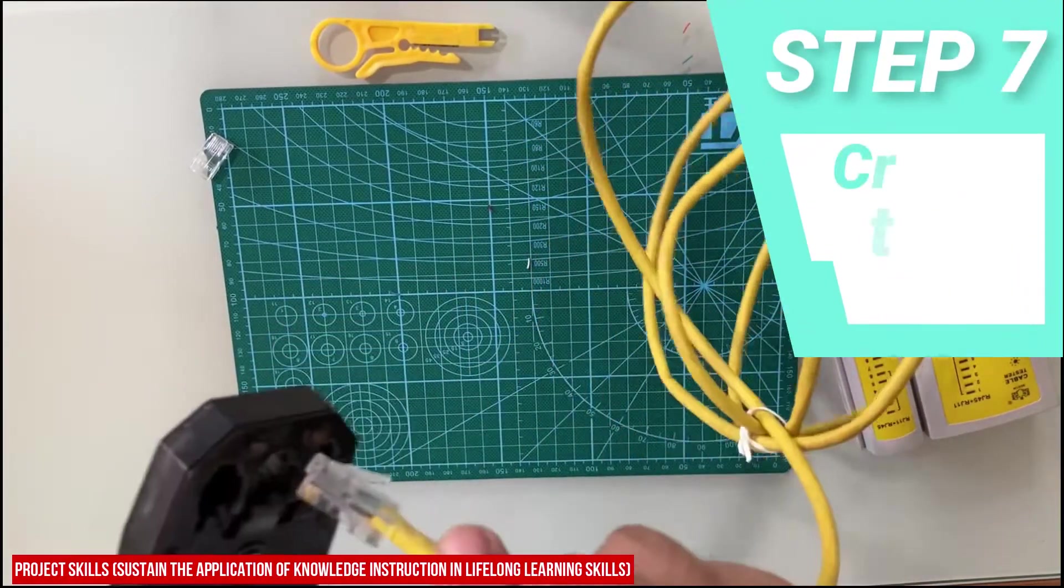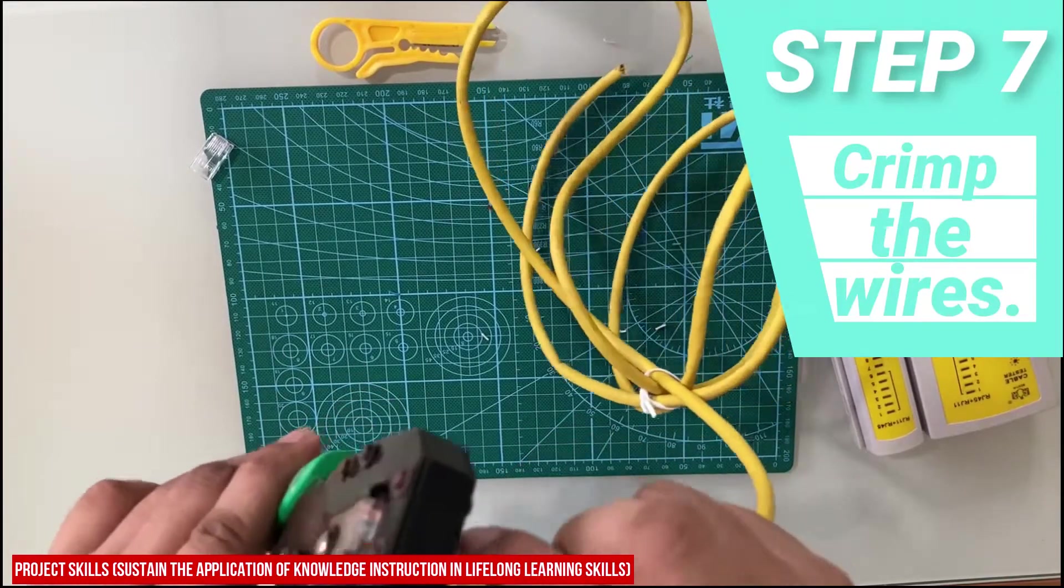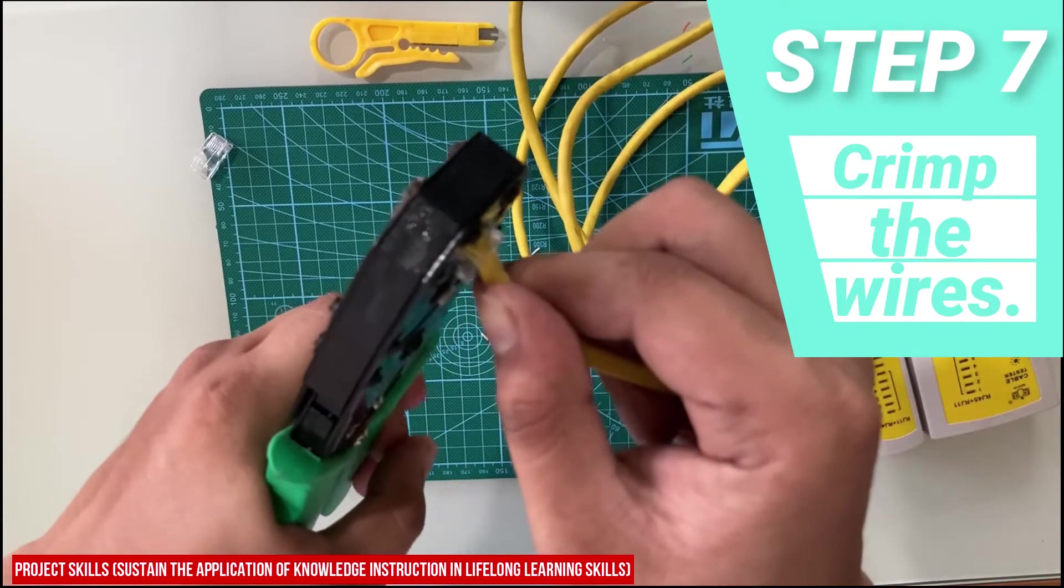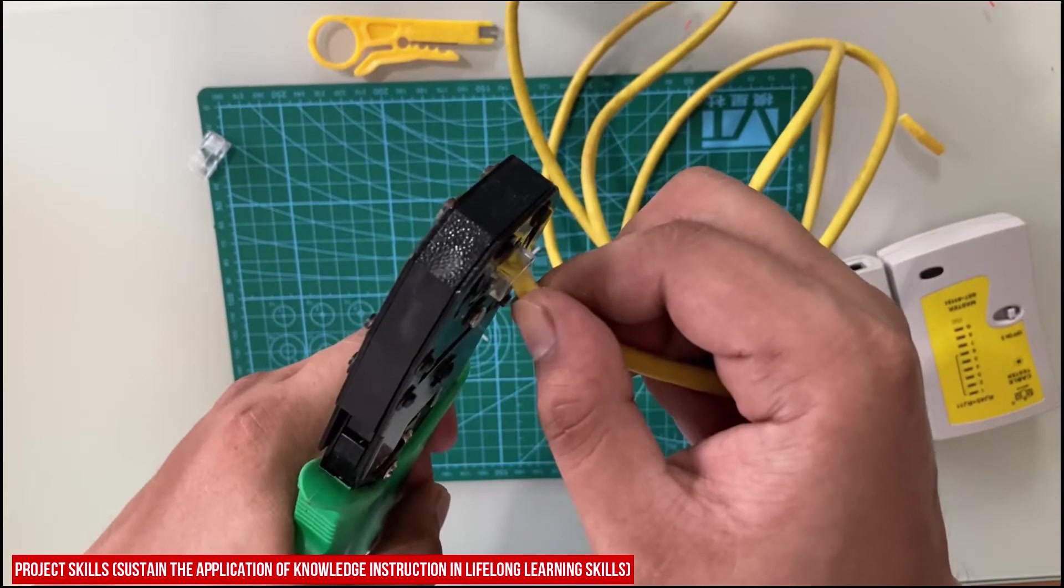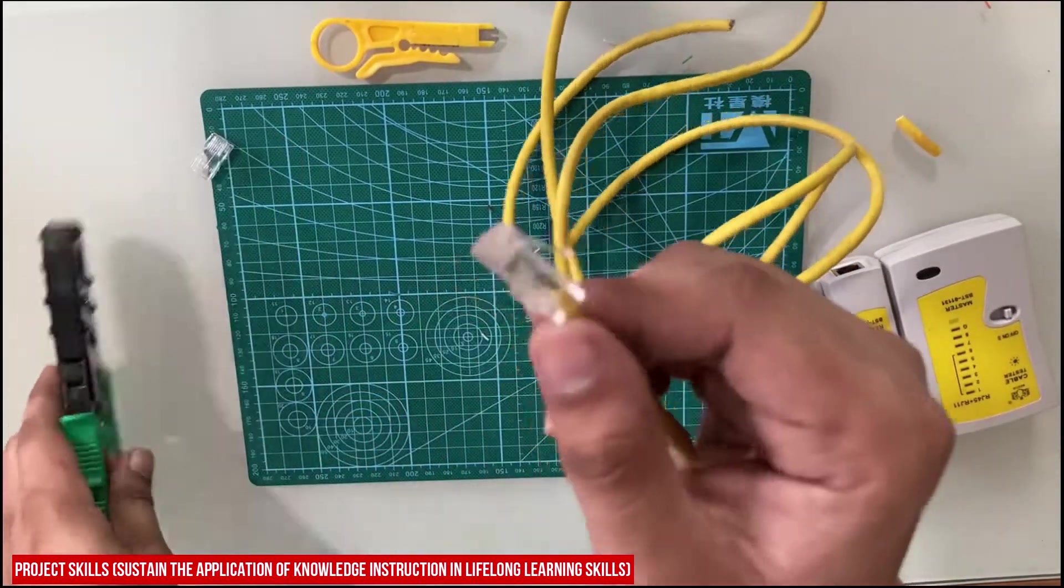The 7th step is you need to crimp the wires to the RJ45. Check the order of the wires before crimping. Make sure they are pushed as far as they can go and are seated nicely next to the gold pins at the end. Push the RJ45 into the crimping device. Do the same steps on the other side of the cable.